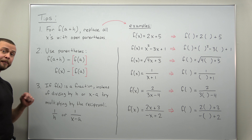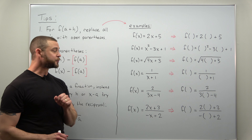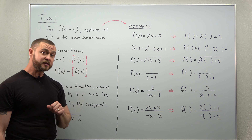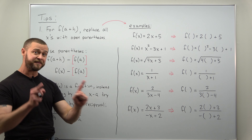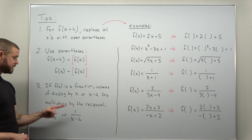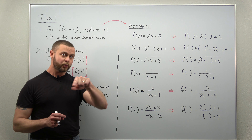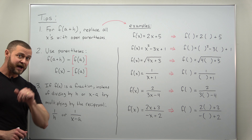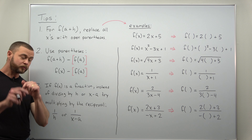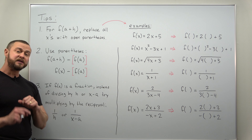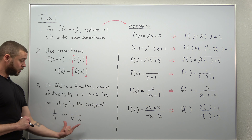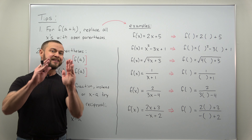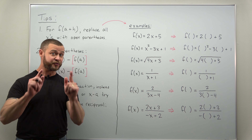The third tip is relevant when the function contains fractions. When you have a function defined as a fraction and you go to the step where you divide by h or x minus a, you end up with fractions within fractions, which is complicated. Instead of dividing by h or x minus a, multiply by the reciprocal — multiply by one over h, or one over x minus a. Go through the same first two steps to simplify, but in step three multiply by the reciprocal. This makes cancellation of factors much easier and avoids fractions within fractions.